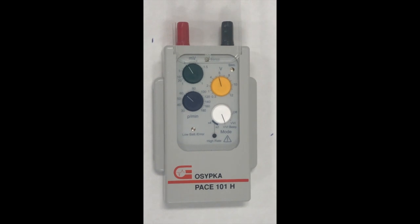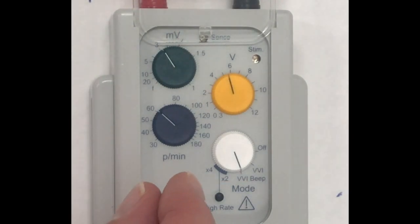In order to measure a ventricular threshold, the device needs to be on and connected to a patient. The rate has to be higher than the intrinsic rate.